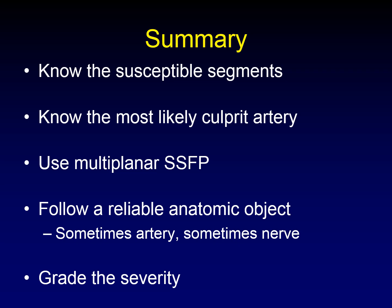In summary, it's important for the radiologist to know the susceptible segments of the nerve and where the transition point is, so that vascular compression in the resistant portion is not mistakenly called microvascular compression. You need to know the most likely culprit arteries in each circumstance. Use multi-planar steady-state free precession images — Fiesta or CISS. In practice, we acquire de novo SSFP images in all three planes rather than reformatted images, which I find much better for troubleshooting, even though it takes a little longer.